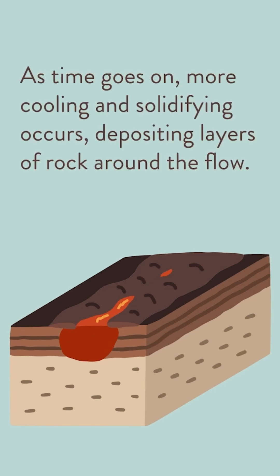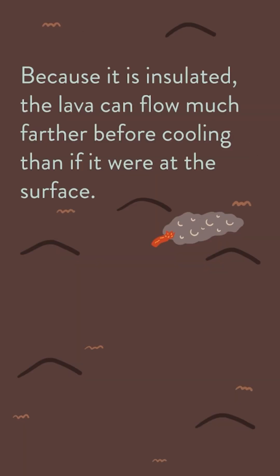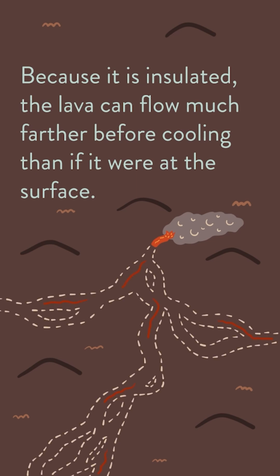As time goes on, more cooling and solidifying occurs, depositing layers of rock around the flow. A roof starts developing and insulates the lava that flows within. Because it is insulated, the lava can flow much farther before cooling than if it were at the surface.